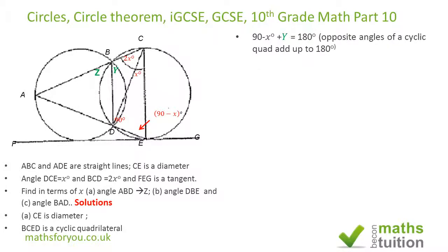So if we call that Y, it means that 90 minus x plus Y will give us 180 degrees. Similarly, because ABC is a straight line, these two angles Z plus Y will give us 180 degrees as well. So that means 90 minus x plus Y equals Z plus Y. If we subtract Y from both sides, the Ys cancel out, so Z equals 90 minus x degrees.